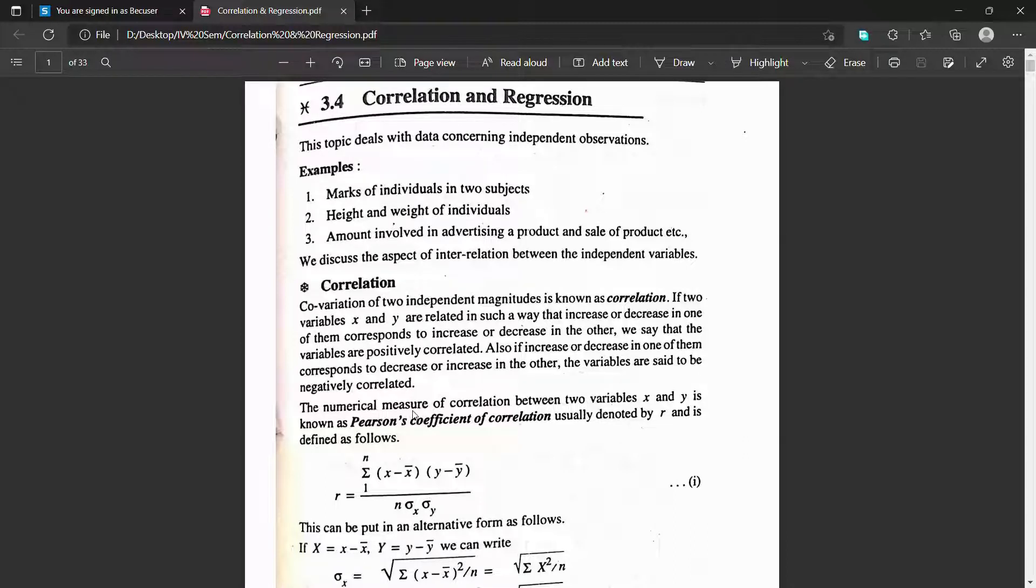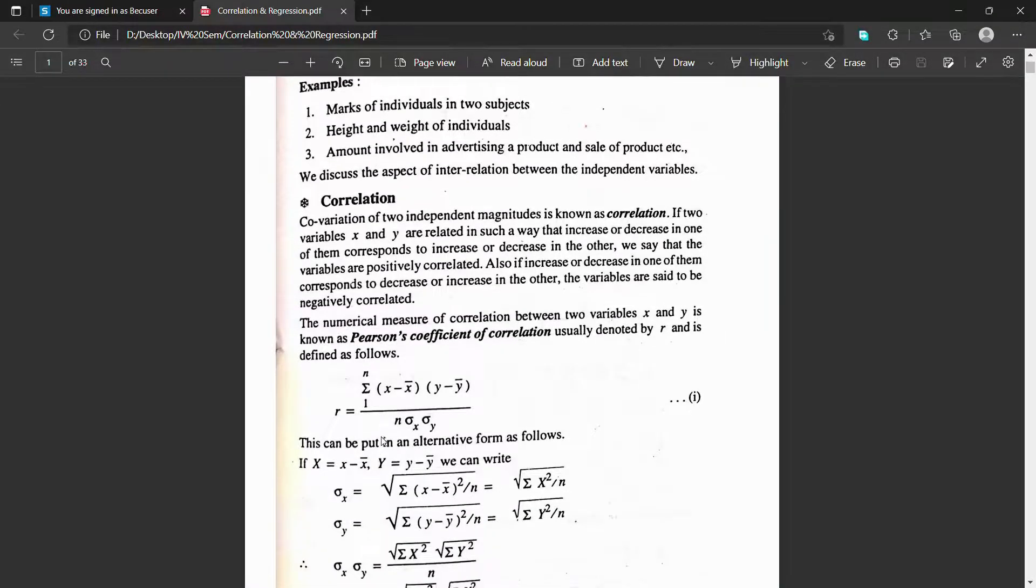The numeric measure of correlation between two variables x and y is known as Pearson's coefficient of correlation, usually denoted by r and is defined as order. You can go through these stepwise equations.